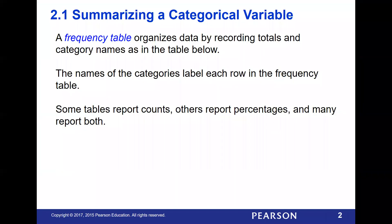So what we will often use as a table to display some of our categorical data is what's called a frequency table. It's basically just a set of rows and columns that have information about how often a particular combination of characteristics occurred in our data. It'll report counts and sometimes percentages of how often things will occur.